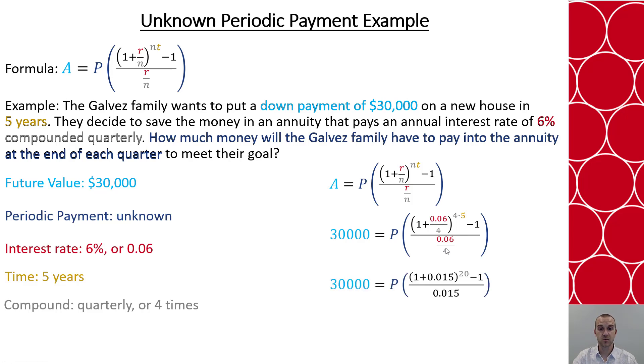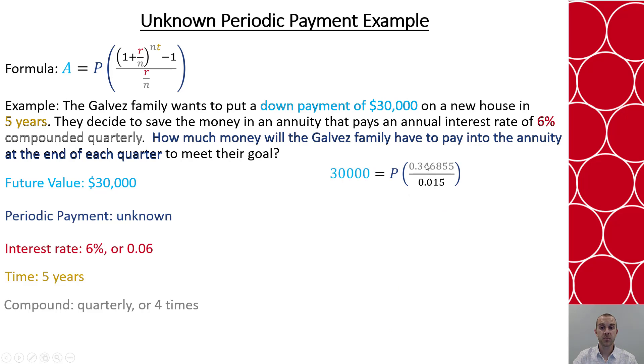So we can simplify this right-hand side, and then inside my parentheses I can add these and then raise it to the twentieth power. I can then subtract one, divide my numerator by my denominator, and then say I have here now 30,000 equals 23.1236671 times P.